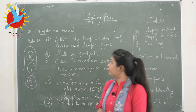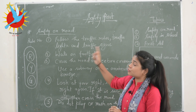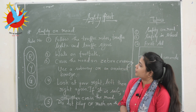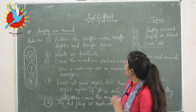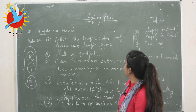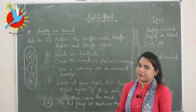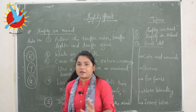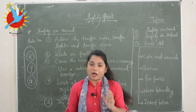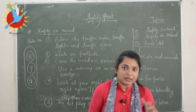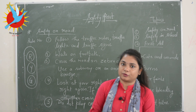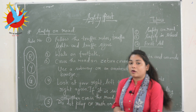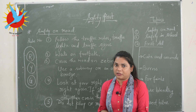Today we are going to talk about safety rules on the road. Rule number one is: follow the traffic rules, traffic lights, and traffic signs. The first traffic rule you have to follow is walk on the left side of the road only.